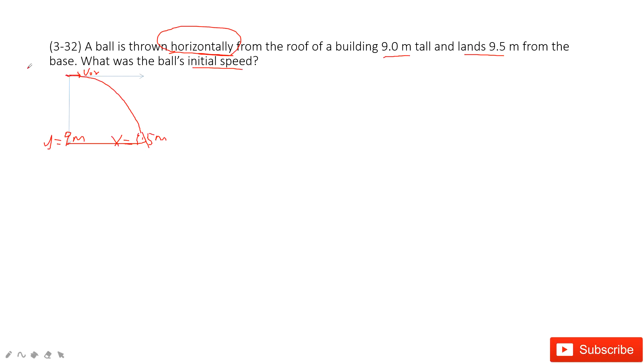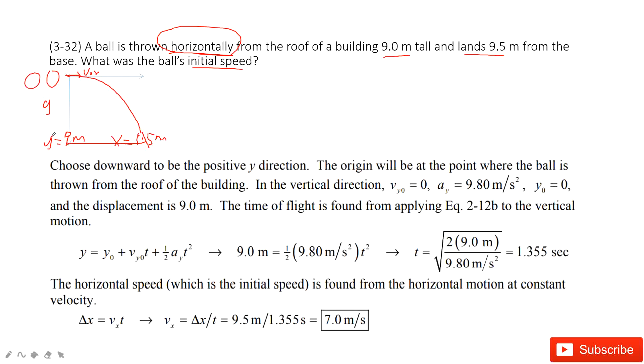We know the initial velocity is zero, the initial position is zero, the acceleration is g, and the final position. So we can easily use an equation to find the time t.